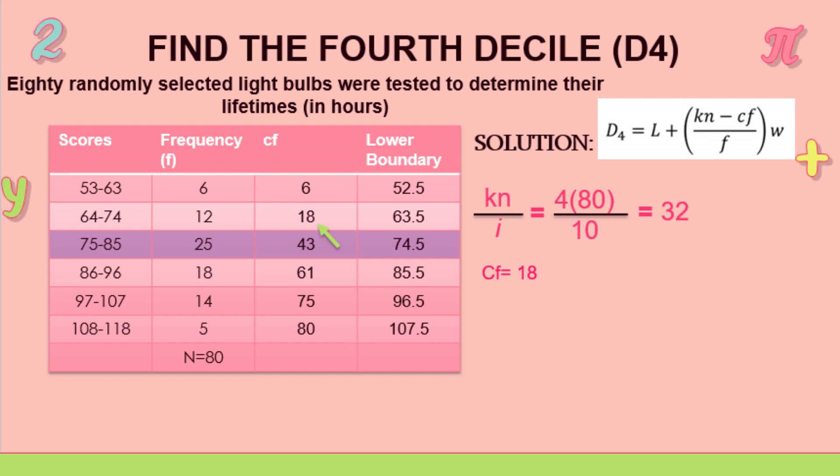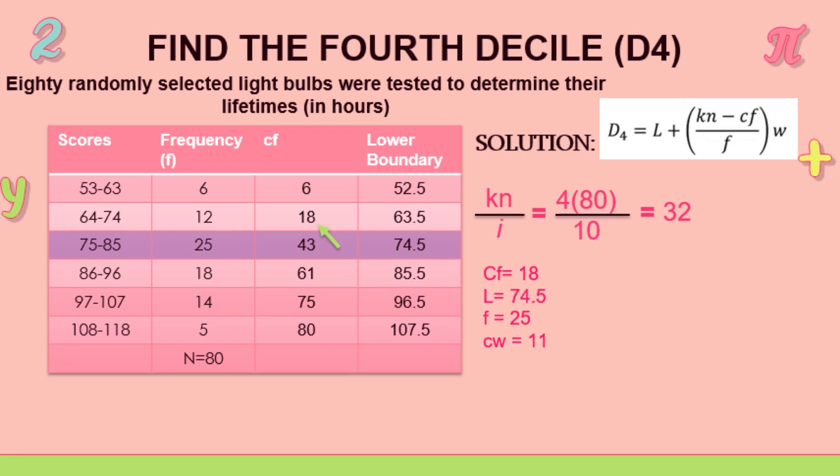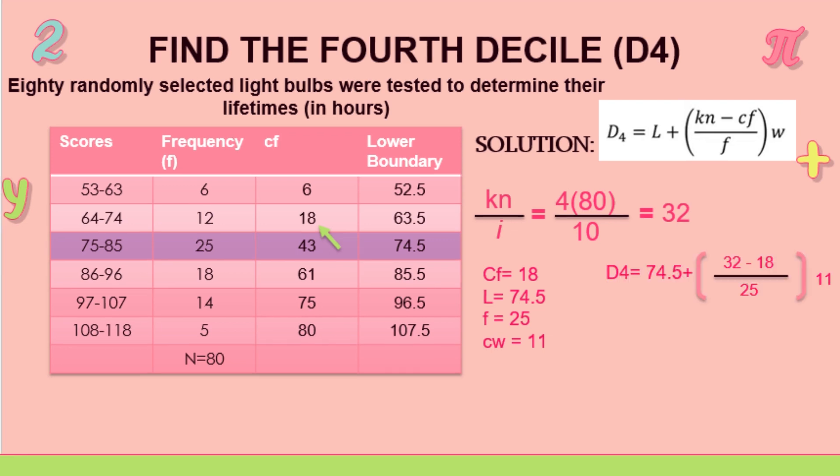So we're going to get, it belongs in the 43, but again we're going to get the preceding class. So we're going to get 18 for the cumulative frequency. And for the lower boundary, we're going to get 74.5, frequency is 25, and class width is 11.